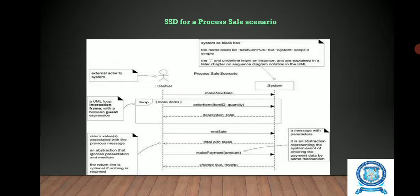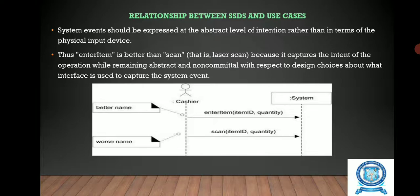This is an example for the process sales scenario system sequence diagram. The relationship between the system sequence diagram and use cases is that system events should be expressed at the abstract level of intention rather than in terms of physical input devices. For example, 'enter item' is better than 'scan' — a laser scan — because it captures the intent of the operation while remaining abstract and non-committal with respect to design choices about what interface is used to capture the system event.